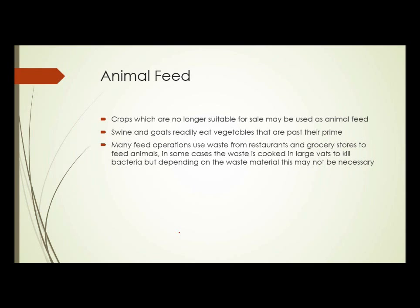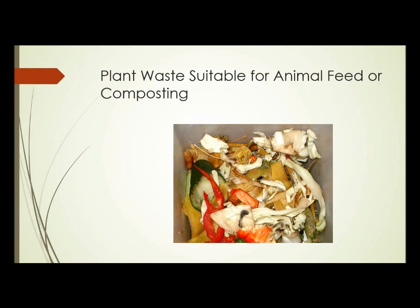One method of disposal is to use the waste products as animal feed. Some crops which are no longer suitable for sale — a little past their prime — may be suitable for use as animal feeds. Animals such as swine, goats, and even chickens will readily eat vegetables that are past their prime. Many feed operations use waste from restaurants and grocery stores to feed animals. In some cases, the waste is cooked in large vats to kill bacteria, but depending on the waste material, that might not be necessary.